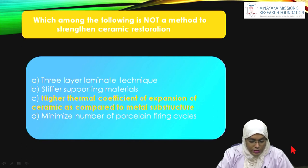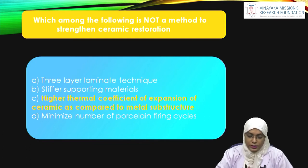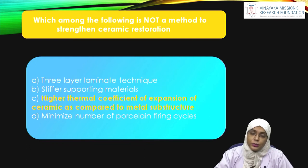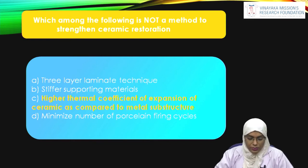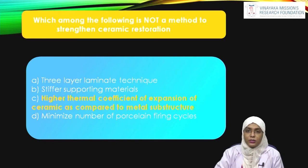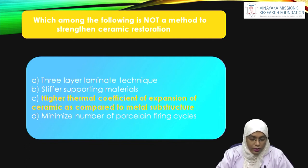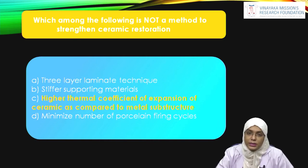Second question: which among the following is NOT a method to strengthen ceramics? Three-layer laminate technique — yes, it is a method because ceramics are added layer by layer with a coefficient of thermal expansion mismatch. Stiffer supporting materials — yes, that also strengthens ceramics. Higher thermal coefficient of expansion of ceramic compared to metal substrate — no, because the inner layer should always have a higher coefficient than the outer layer, so the metal substrate should have a higher coefficient. Option C is wrong, making it the answer.